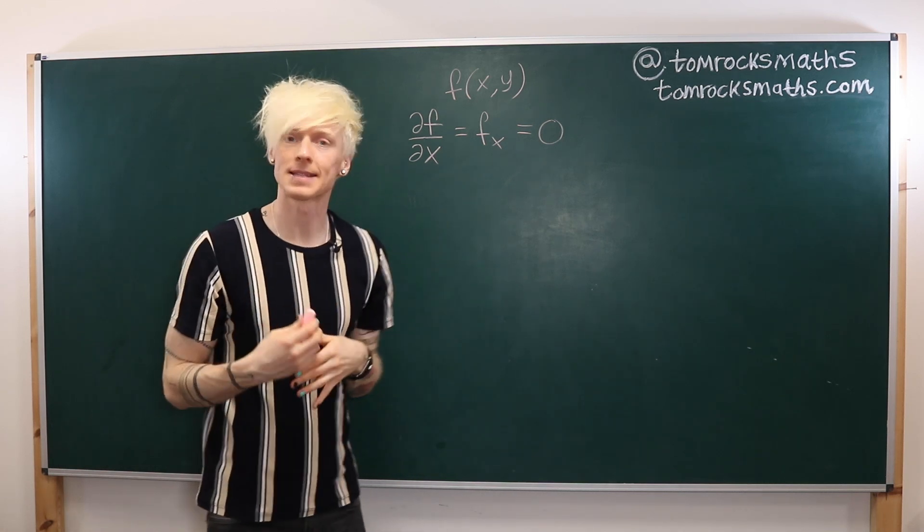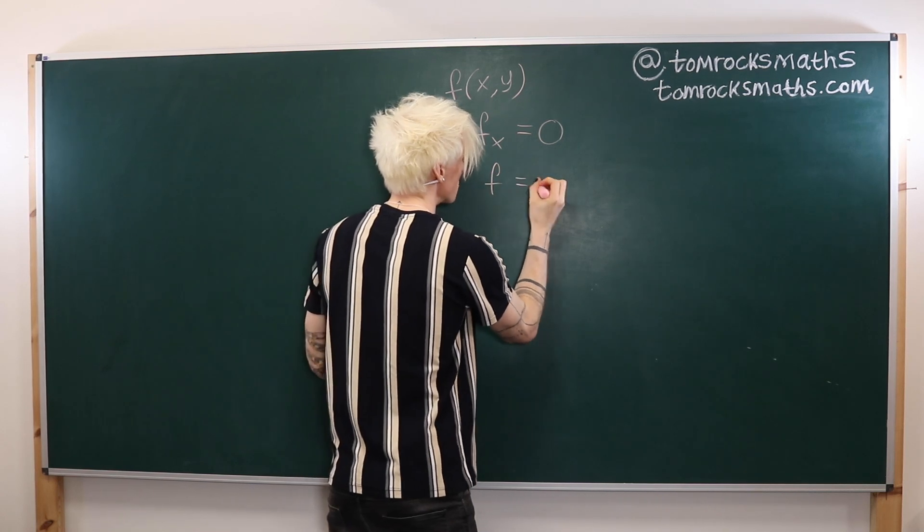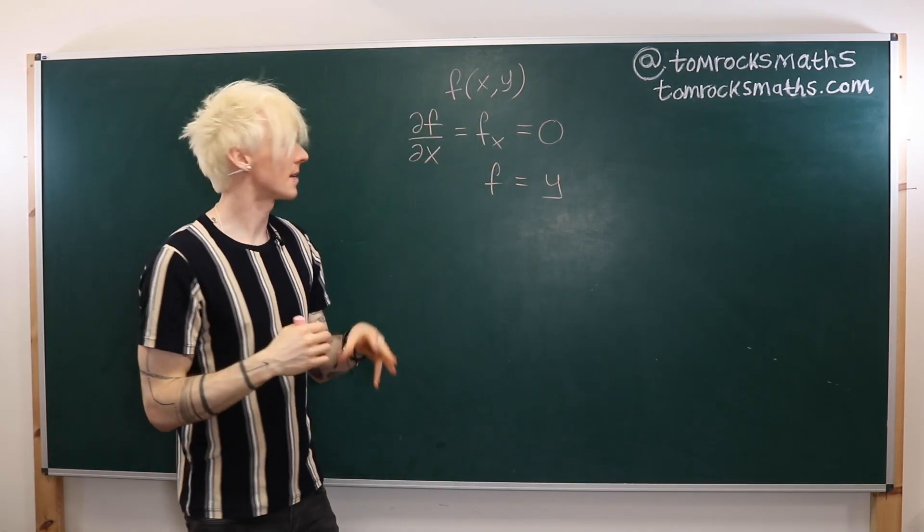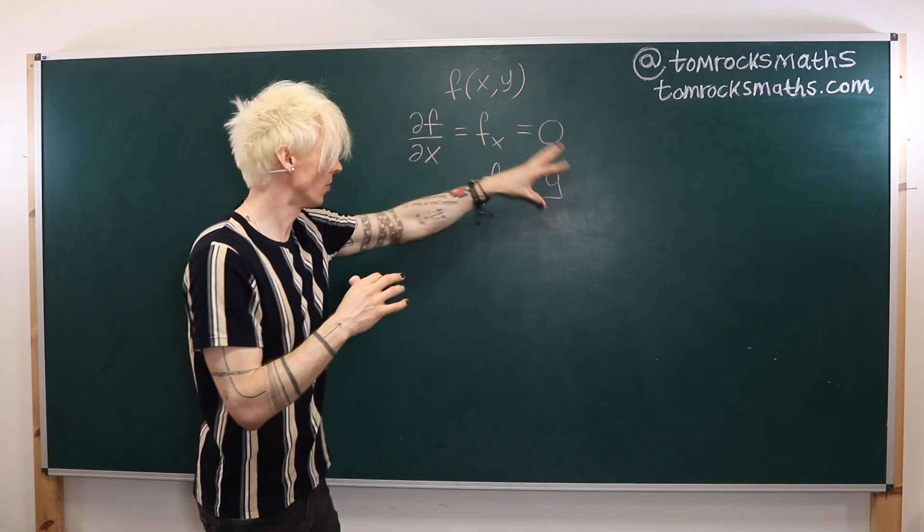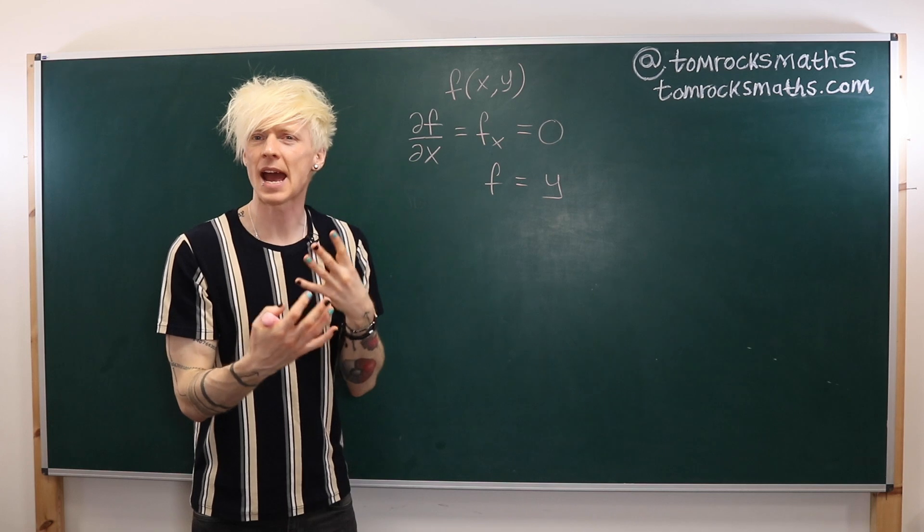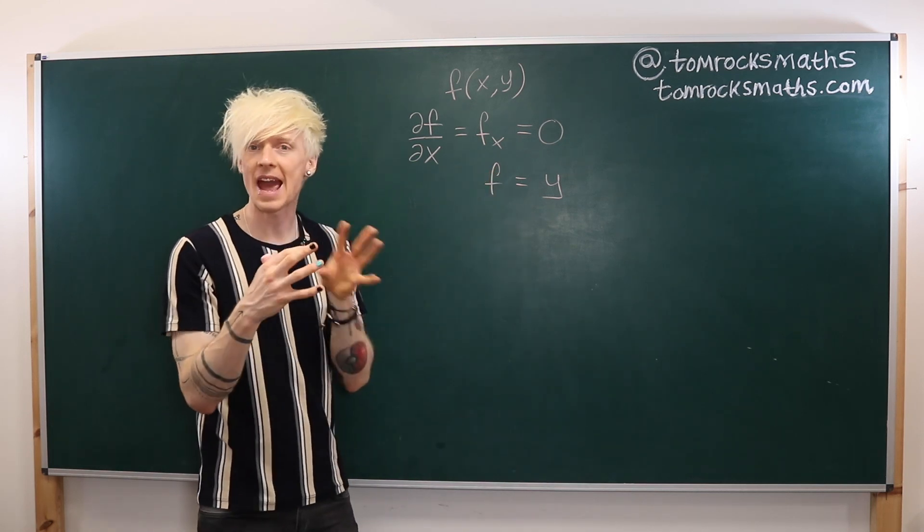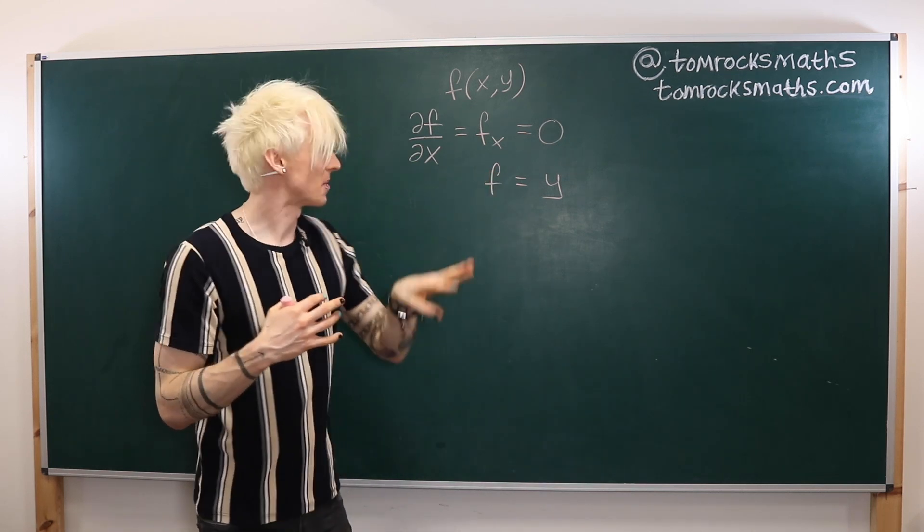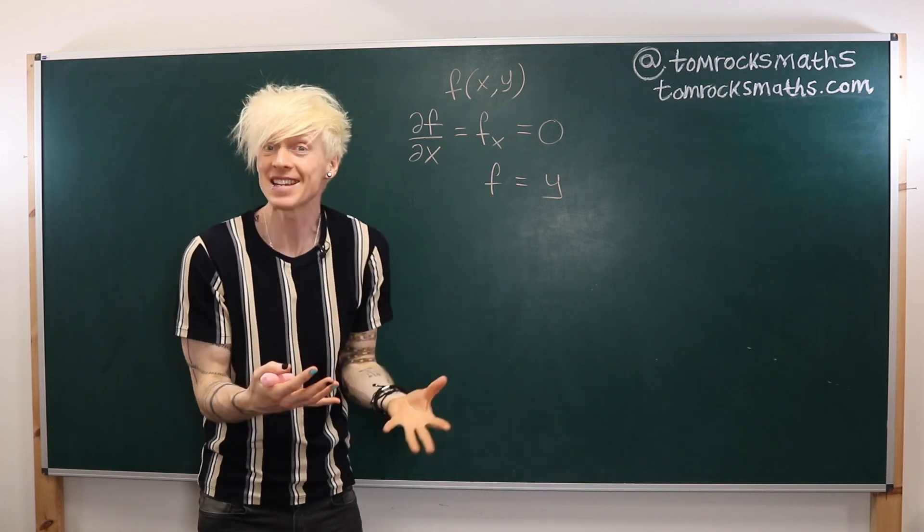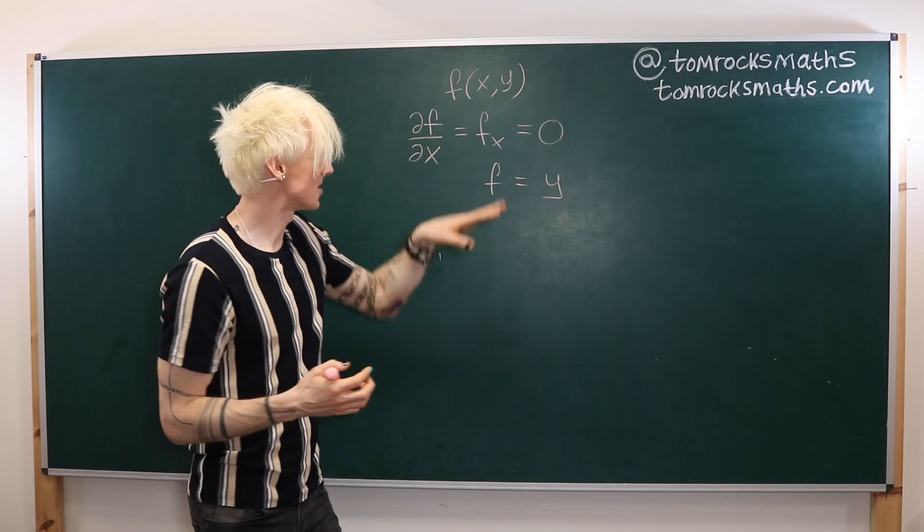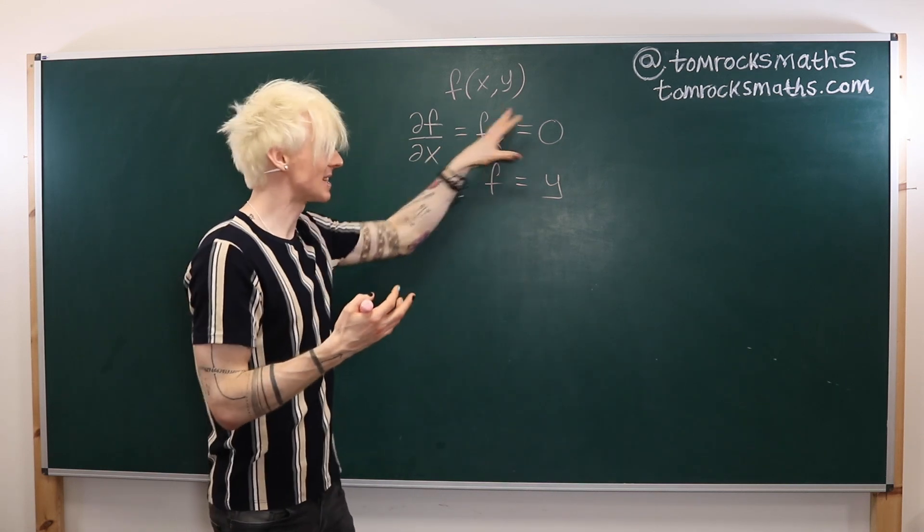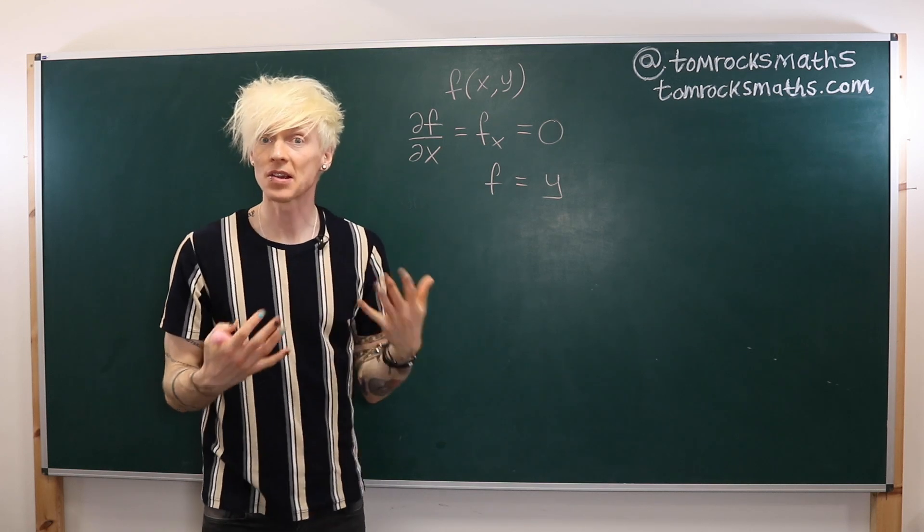One simple example might be if f was equal to y. If I take the x partial derivative of this function then that is looking at how f changes in the x direction. But since f doesn't depend on x it doesn't change in the x direction and so therefore ∂f/∂x is indeed zero for this particular function.